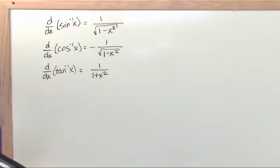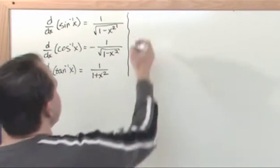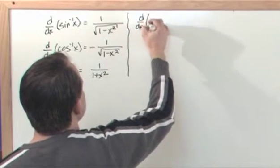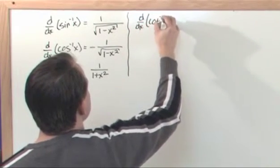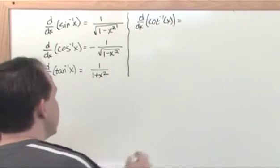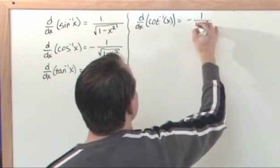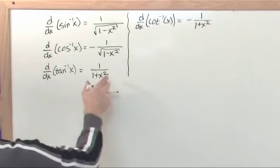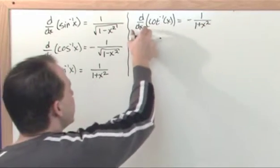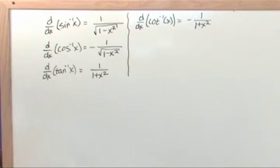Continuing on the board — the derivative of the inverse cotangent of x is equal to negative one over one plus x squared. Notice it's the same thing: the derivative of the inverse tangent equals one over one plus x squared, and the derivative of the inverse cotangent equals the negative of the same thing. You can see some symmetry here that makes your life simpler.